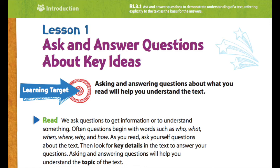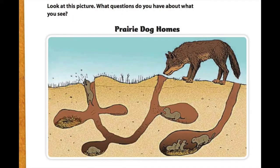Alrighty, let's keep going. All right guys, now they want us to look at this picture. What questions do you have about what you see? Let's take a look at the title of our picture — it says Prairie Dog Homes. What questions do you have? Do you have any who questions? Any what questions? When? Why? Where? And how questions? I want you to think of questions while you're looking at this picture. Take a look at all the areas and form some questions in your noggin about what you're thinking about this picture.